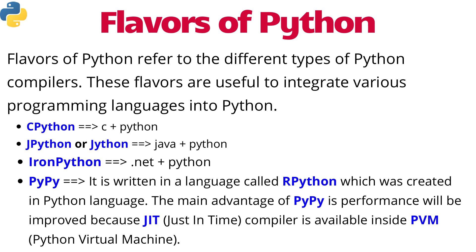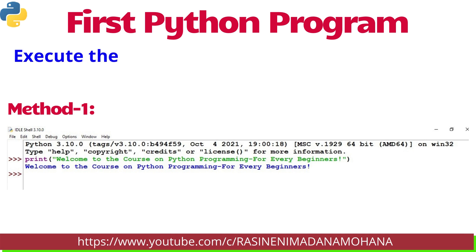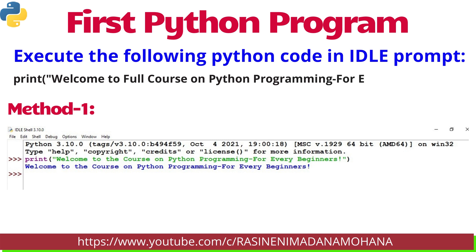Now let us run our first Python program. How to demonstrate the first Python program — let us see. Here we will execute one simple print command in Python IDLE prompt to display the message: 'Welcome to the full course on Python programming for every beginners.' This is our course title. In the IDLE shell prompt there are two methods.